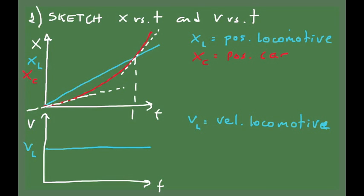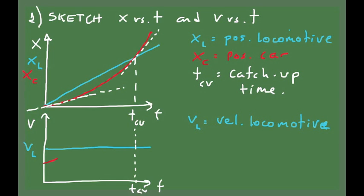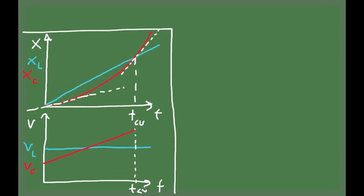Let's call that time t_cu for catch-up. In the velocity versus time plot, the velocity of the car grows linearly due to constant acceleration, starting with some initial velocity and reaching a final velocity at catch-up time. The velocity of the car at catch-up must be higher than the velocity of the locomotive, since the car started with a lower velocity and there is a distance between the locomotive and the car that needs to be made up.